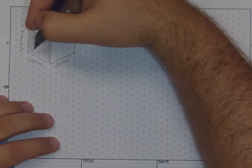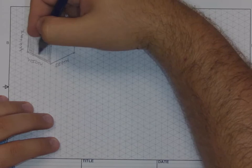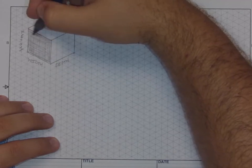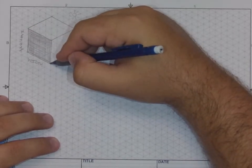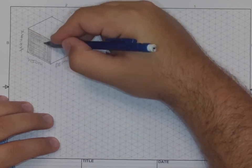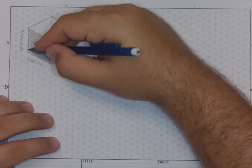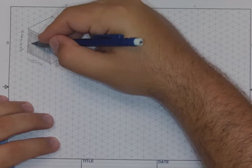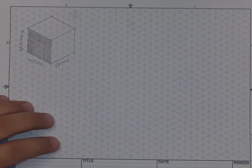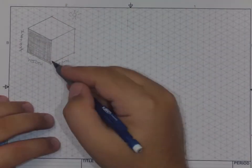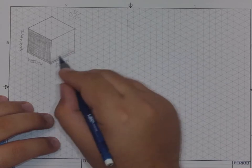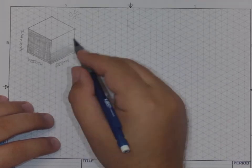I'm going to cross hatch, meaning I'm going to go in one direction and then back over in an opposite direction to increase that contrast. I might want to hit some of these corners and fill that in, just dark enough to see a difference. On the right side we'd see just a little bit of shading.